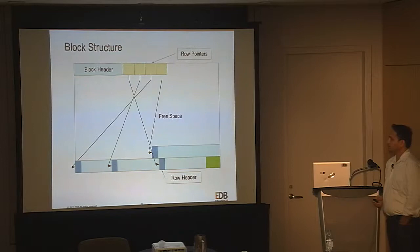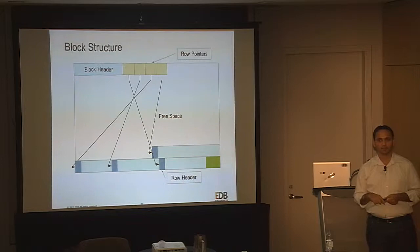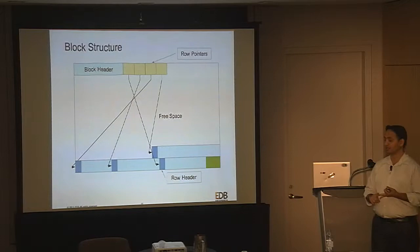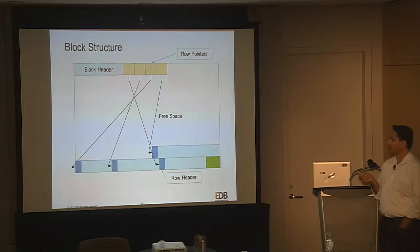Just like a block has a block header for its metadata, every row also has its own metadata in a row header. When we talked about MVCC — multiversion concurrency control — all that information is embedded in row headers: which transaction created a version of the row, which transaction is about to delete a row, etc. So every row has a row header, and that is used in managing multiple versions of rows.